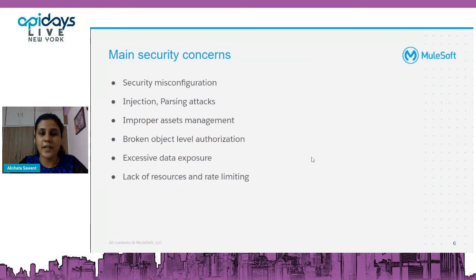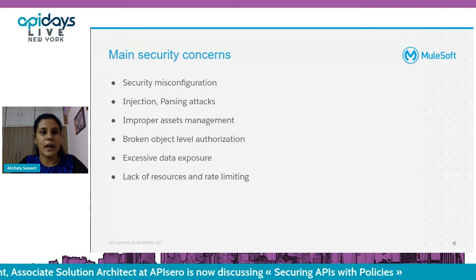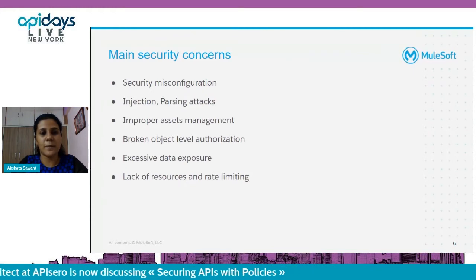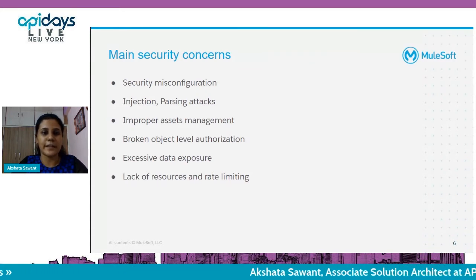Lack of resources and rate limiting is another concern. If the number of requests increases, there could be a denial of service attack — hackers trying to send a large number of requests to bring your servers down. You need to maybe implement SLA tiers, limit the level of access, and protect your resources. These are a few security concerns, but there are more — we should consider a holistic approach to API security.